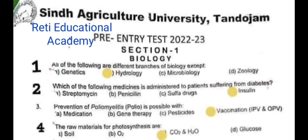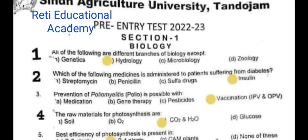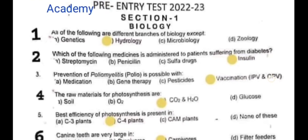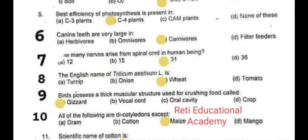Question 1 – Biology: All of the following are different branches of biology except hydrology. Question 2: Which of the following medicines is administered to patients suffering from disease? The correct answer is D – Insulin. Question 3: Prevention of poliomyelitis (polio) is possible with vaccination IPV and OPV. Question 4: The raw materials for photosynthesis are CO2 and H2O. Question 5: Best efficiency of photosynthesis is present in B – C4 plants.